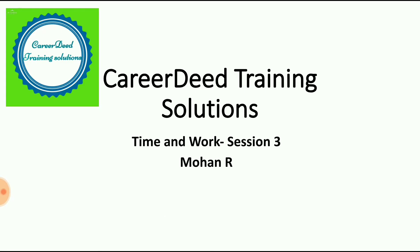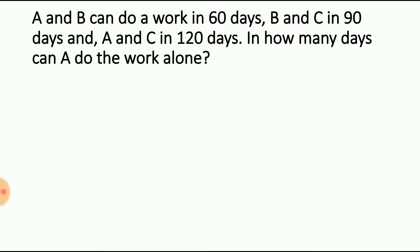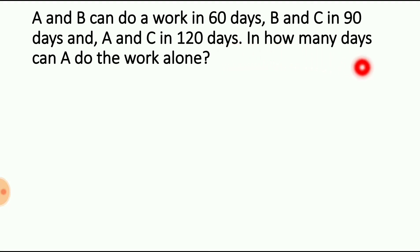Please enter into model number 1. A and B can do a work in 60 days, B and C in 90 days, A and C in 120 days. In how many days can A do the work alone? In previous modules, we saw the individual efficiency based problems where the time taken by the individual is given. Here, grouped time is given.